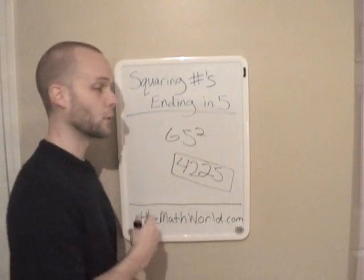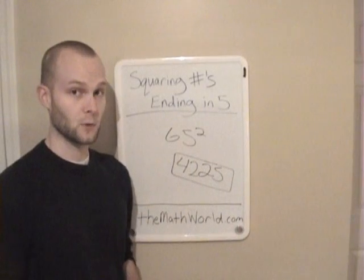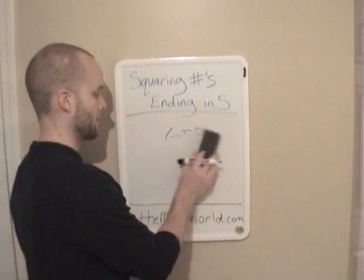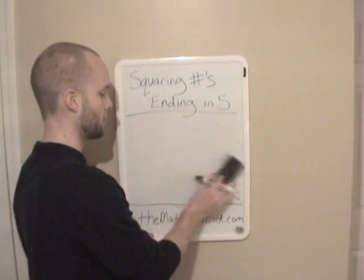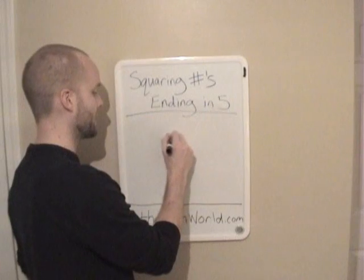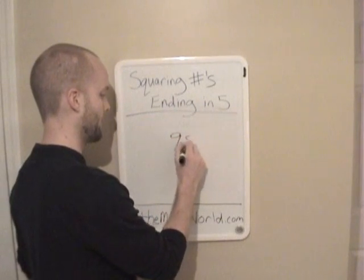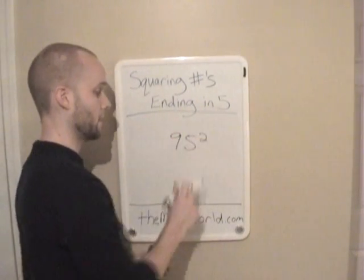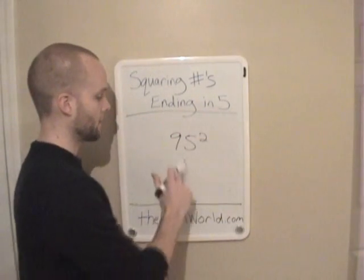So you write down 42, and this is your answer: 4,225. And we'll look at another one — let's do 95, a bigger one. 95 squared.